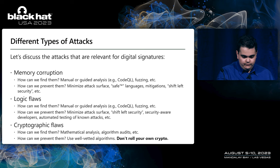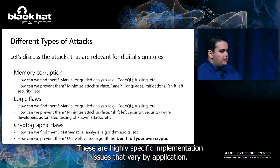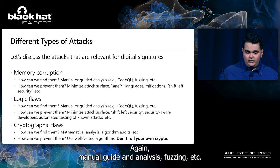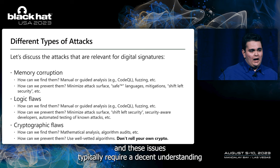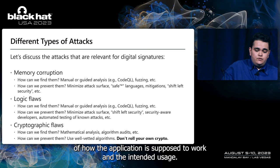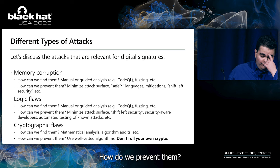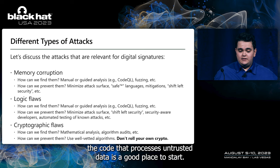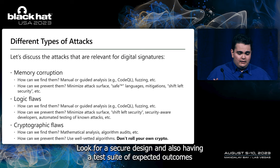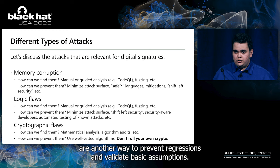Next, we have logic flaws — highly context-specific implementation issues that vary by application. How do we find them? Again, manual or guided analysis, fuzzing, etc. These issues typically require a decent understanding of how the application is supposed to work. A good way to find these is to look for differences in logic between a design document and the actual implementation. How do we prevent them? Minimizing the code that processes untrusted data is a good place to start. Absolutely look for a secure design, and also having a test suite of expected outcomes is another way to prevent regressions and validate basic assumptions.